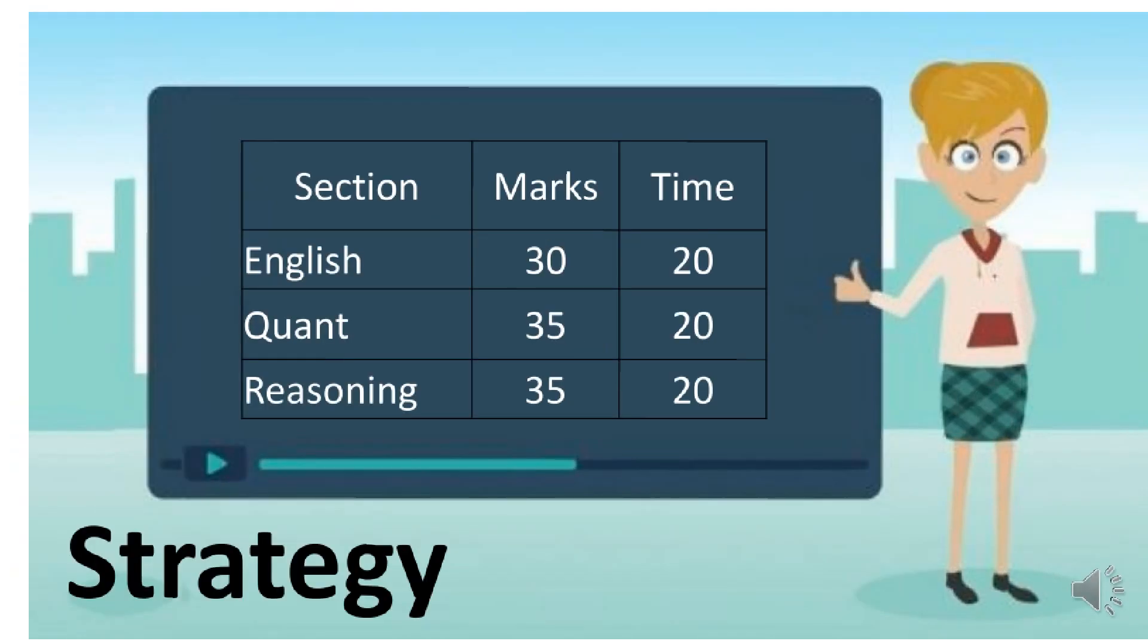Now this new paper pattern has come where they have changed it - verbal 30, quant 35, logic 35 marks, but they have put sectional timing. Earlier there was no sectional timing, now there is sectional timing of 20 minutes, 20 minutes, 20 minutes - 60 minutes total paper, 1 hour paper but 20 minutes per section. This is a very good thing for you.